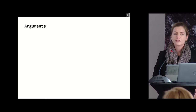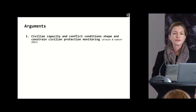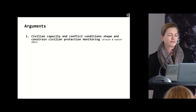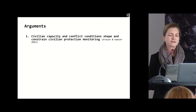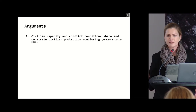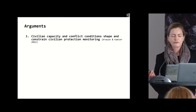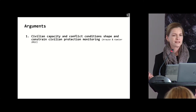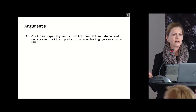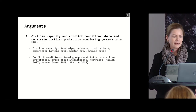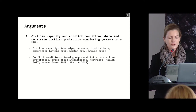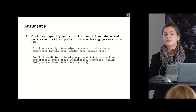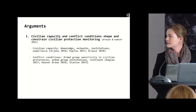I present three arguments based on this work. The first is that civilian capacity and conflict conditions both shape and constrain civilian protection monitoring. The analysis focuses on how civilian protection monitoring can work in different conflict zones, what the potentials are, and what the limitations of local agency are. By civilian capacity I mean the knowledge, networks, institutions, and experience of how to act in a conflict zone.